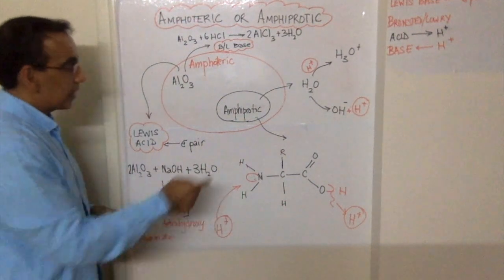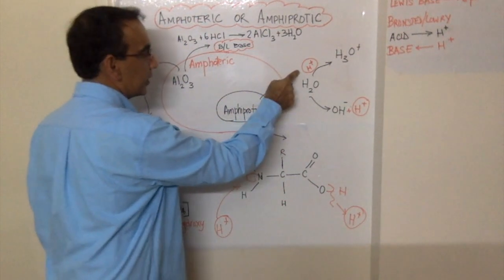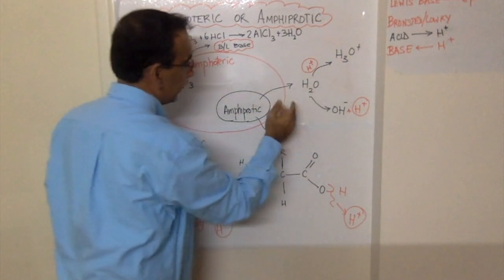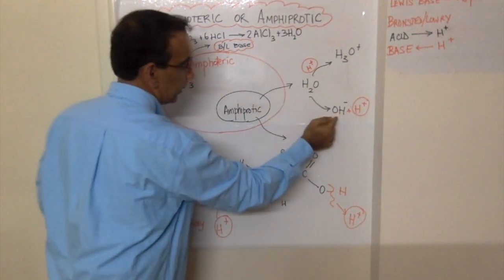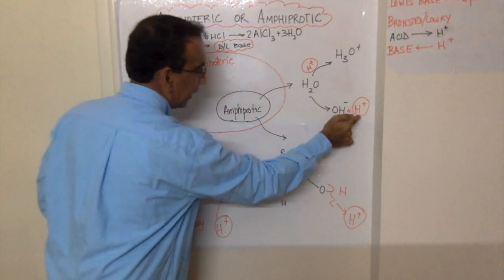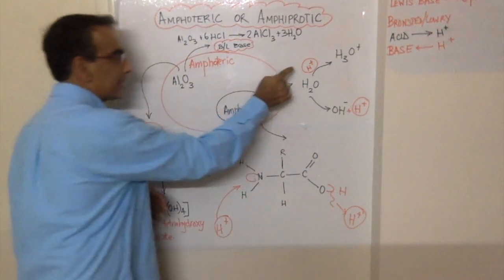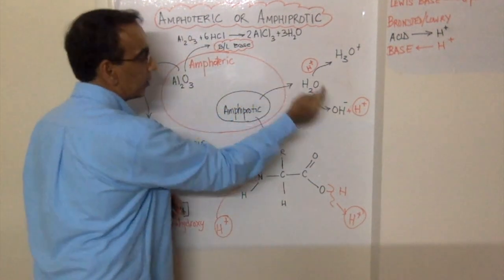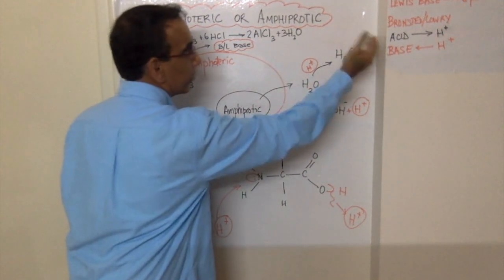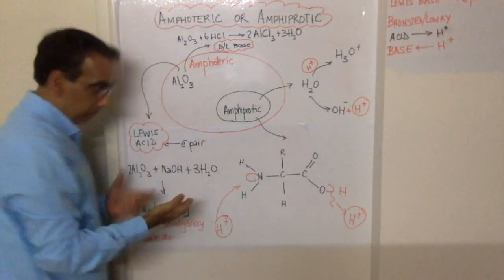Take, for example, water, which is able to accept a proton or a hydrogen ion, or it can donate a proton to form a hydroxyl ion and an H⁺, behaving both as a proton acceptor or as a proton donor, in accordance with the Brønsted-Lowry definition.